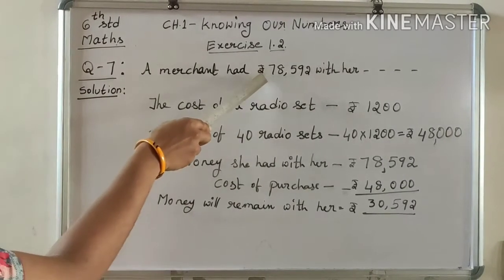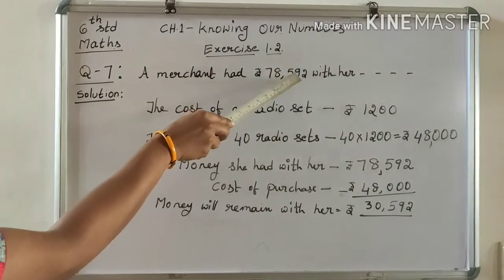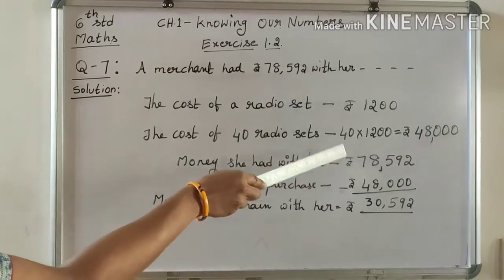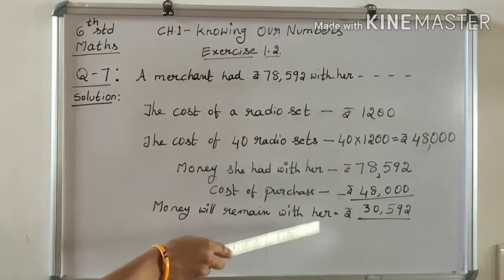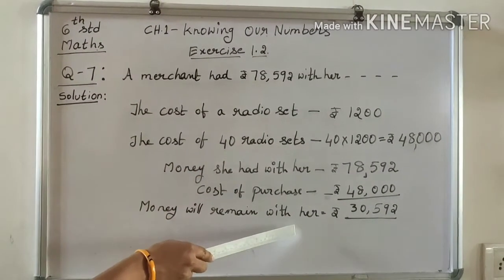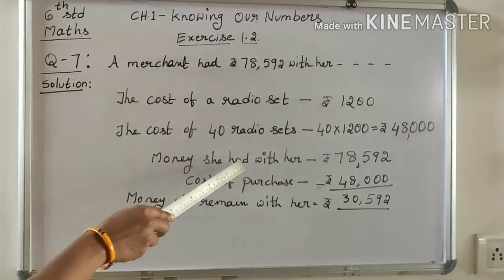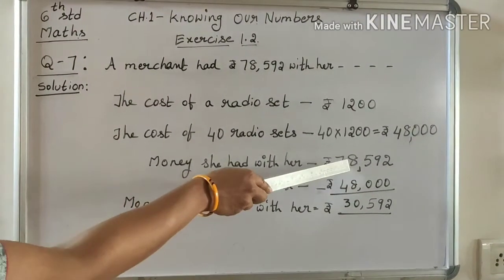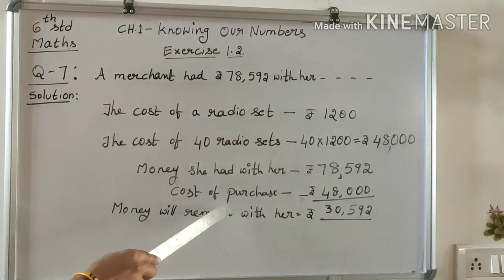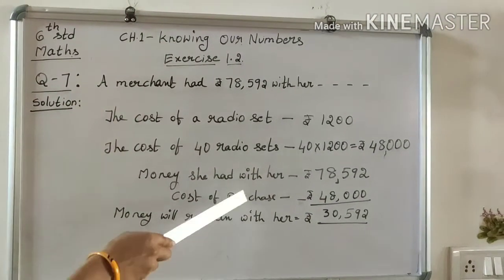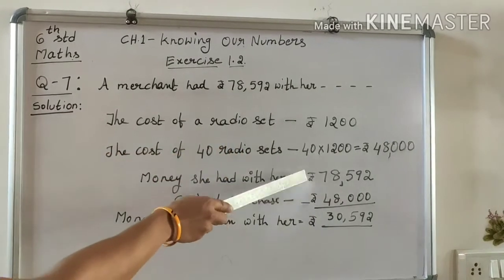The total amount is Rs. 78,592. The cost of purchase is Rs. 48,000. So we subtract: Rs. 78,592 minus Rs. 48,000.